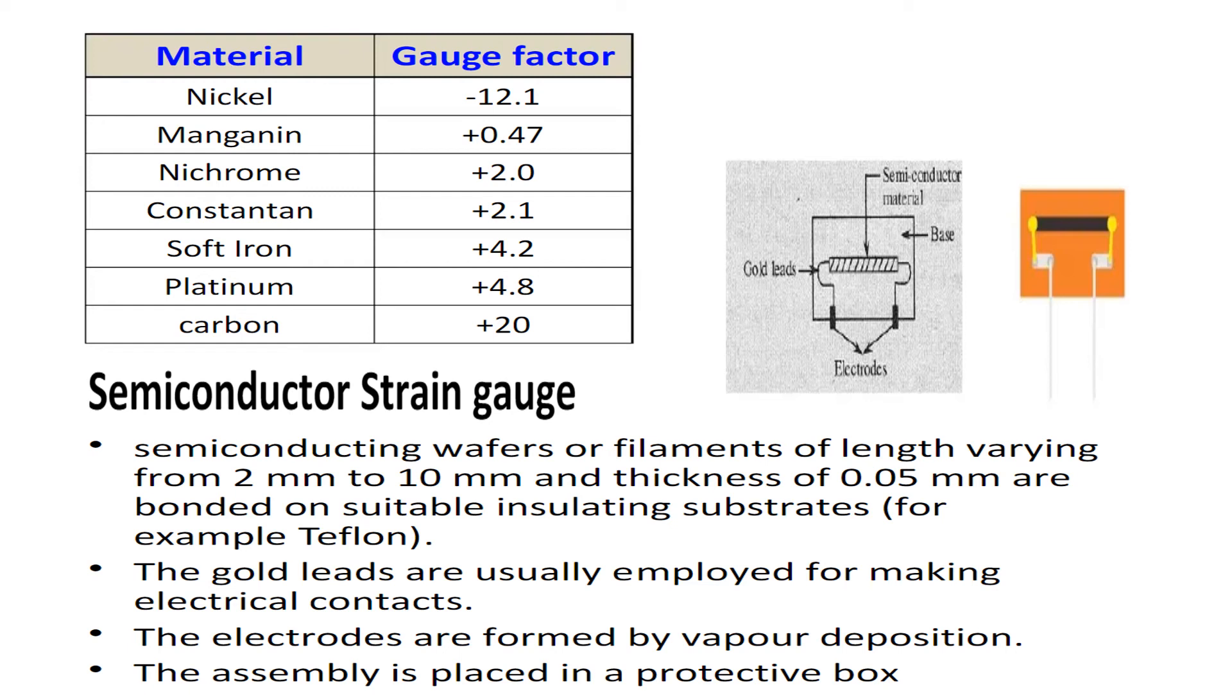Semiconductor strain gauge: semiconducting wafers or filaments of length varying from 2 mm to 10 mm and thickness of 0.05 mm are bonded on suitable insulating substrates, for example Teflon. The gold leads are usually employed for making electrical contacts. As shown in the figure, there are two leads or terminals having electrical contacts, four leads are there. The electrodes are formed by vapor deposition. The assembly is placed in a protective box.